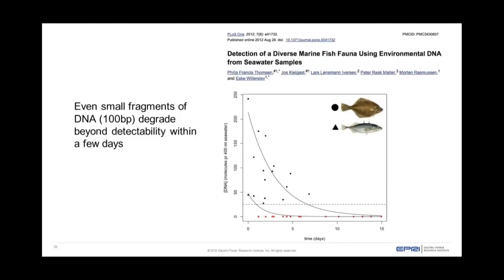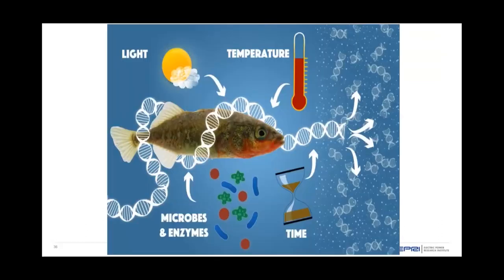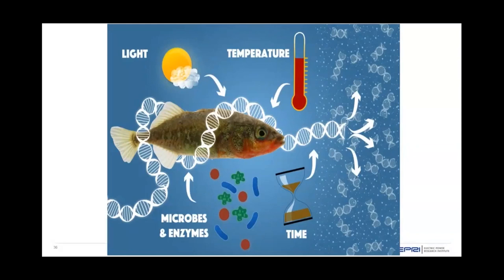In aquatic habitats, small DNA fragments degrade beyond detectability within just a few days — so just as with traditional sampling, you can say that organism was there when you were there. There are many environmental factors that impact how DNA persists in an ecosystem, including light, temperature, time, microbes, and enzymes. This is very habitat and ecosystem specific, whether working with aquatic habitats, sediments, ice cores, or pollen samples, each having completely different scenarios for how long a DNA trace persists.